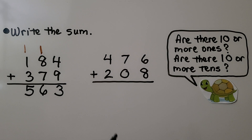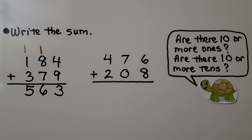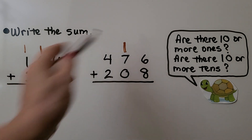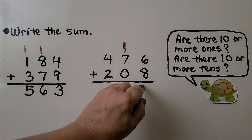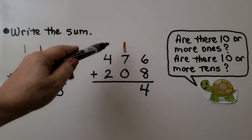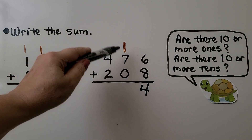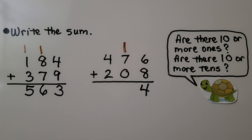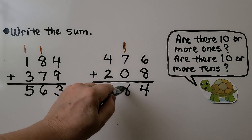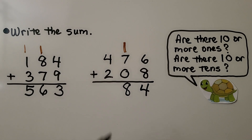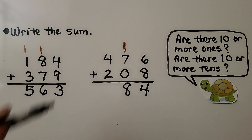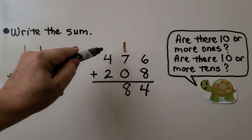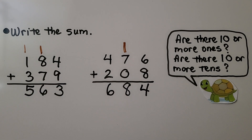Let's try the next one. We start with the ones place: eight plus six is fourteen. Are there ten or more ones? Yes — we have one ten, four ones. So we regroup the one ten to the tens place and write the four ones in the ones place. Now we have seven tens and one ten and zero tens — that's eight tens. Are there ten or more tens? No, we only have eight. Then we add the hundreds: four plus two is six. We have six hundred eighty-four.